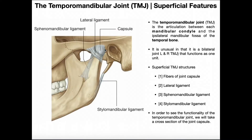So it is a synovial joint, meaning it has a synovial joint capsule. Here is the fibrous capsule of the temporomandibular joint. It has all the features of a synovial joint — bursa, synovial fluid, a synovial capsule, all that. Right here we have a lateral ligament, which directly stabilizes the TMJ by connecting this portion of the zygomatic arch to the posterior aspect of the mandibular condyle. Notice that it runs adjacent to the joint capsule itself.